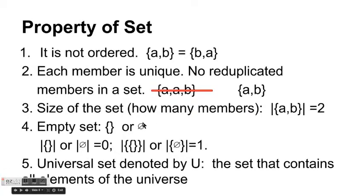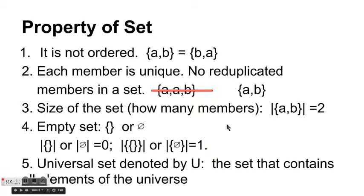We can also define the size of a set, which is determined by how many members are inside it. We use two vertical bars to denote the size. For example, |{A, B}| = 2 because there are two members inside that set.